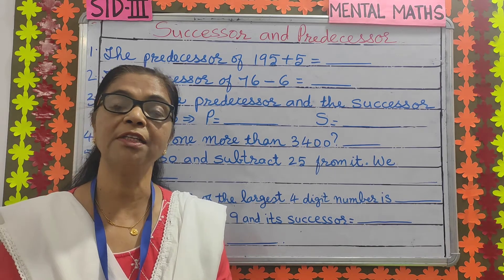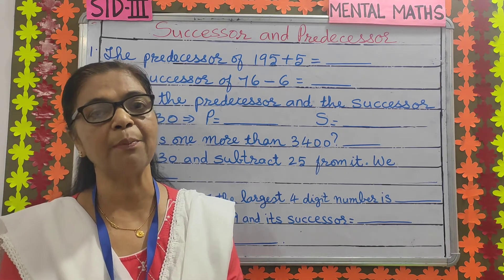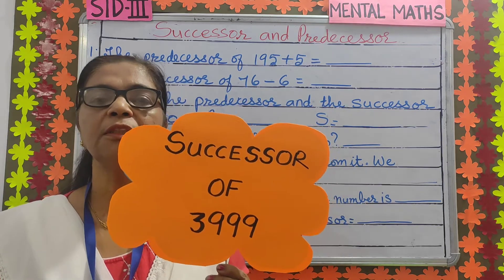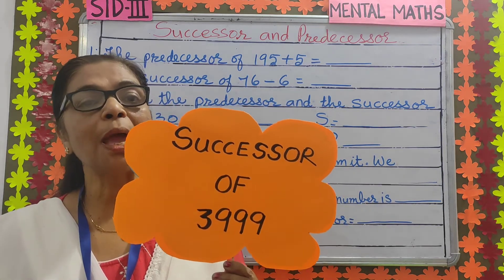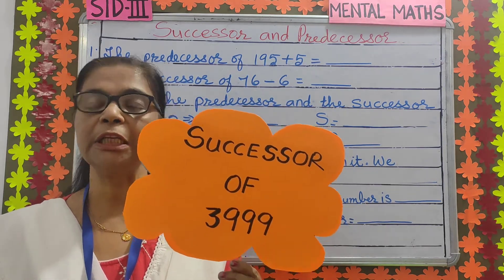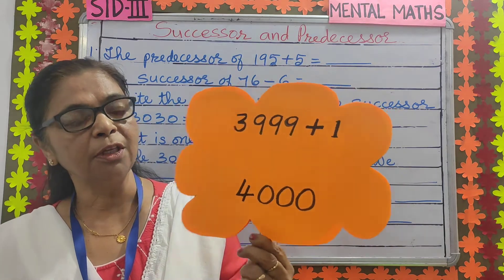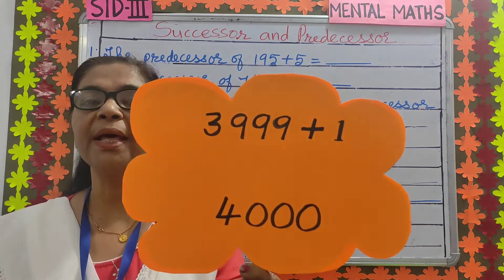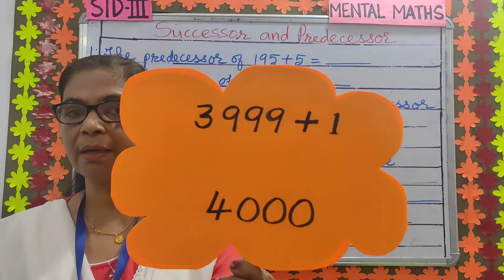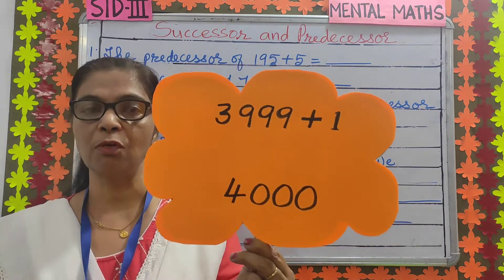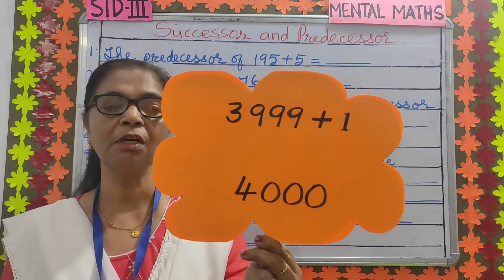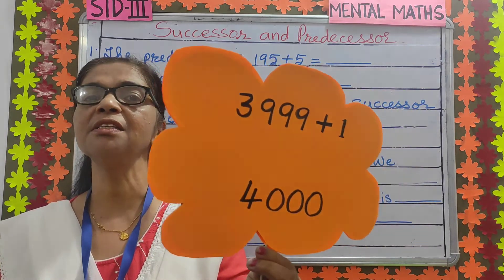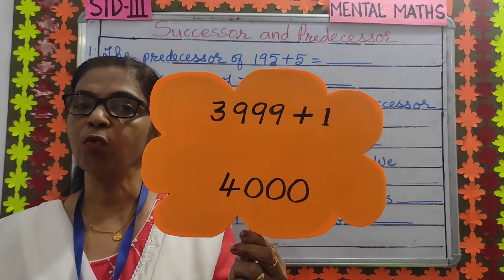Children, how will you find the successor and predecessor of a number? To find the successor, you have to add 1 to the given number. So, 3999 plus 1 is 4000. The successor of 3999 is 4000.